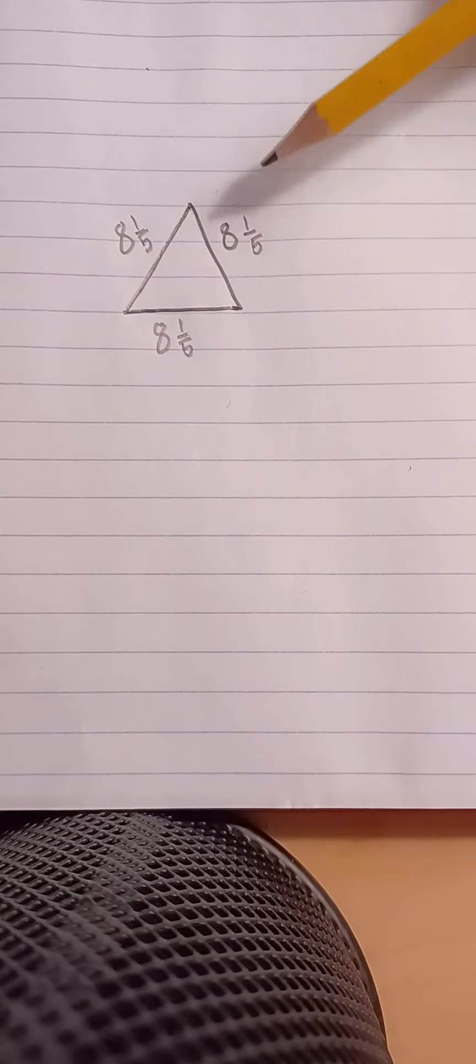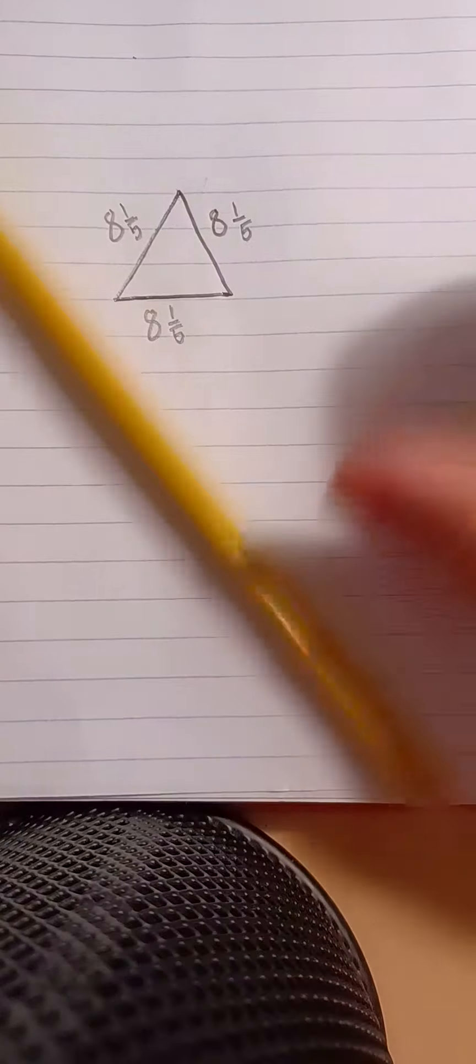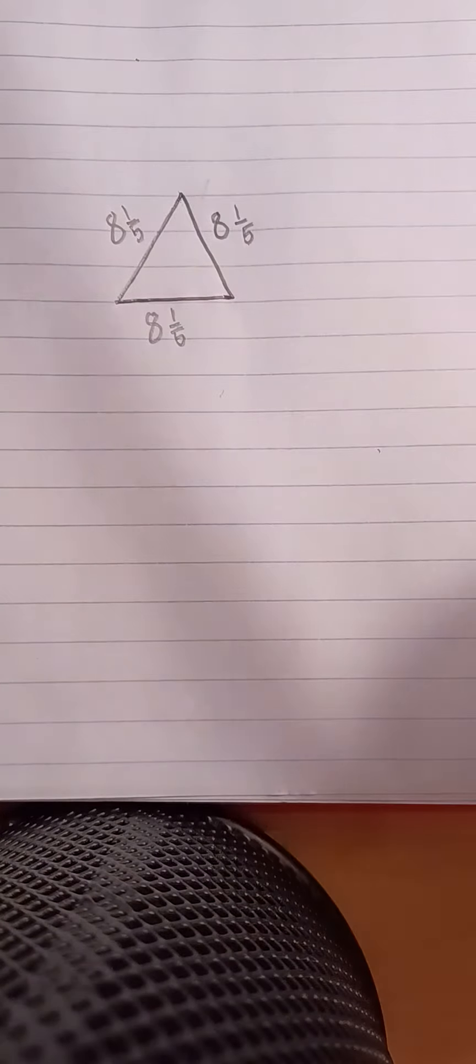Well, let's see. 8 and 1 fifth plus 8 and 1 fifth plus 8 and 1 fifth. So if you don't have a calculator, then you can just jot this down on your notebook and write the equation.